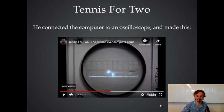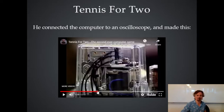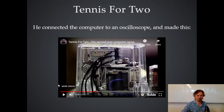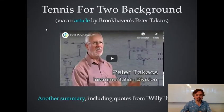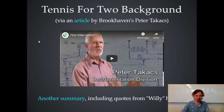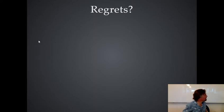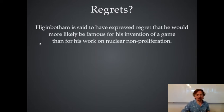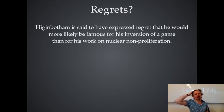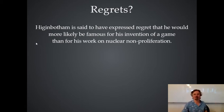That little box you saw in the video — that's a relay if you've never actually seen one. It's a little electromagnetic switch thing: you put current through and it pulls a lever down with magnets. There's some more info about that whole Tennis for Two thing if you want. William Higginbotham is said to have expressed regret that he would probably end up being more famous for his invention of a computer game — which he made in a weekend or so — as opposed to what he thought his real life's work was, which was nuclear non-proliferation.